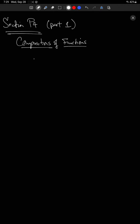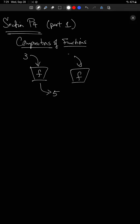We've talked in the past about a function being kind of this black box that you put something in and you get something out. Maybe, for example, this function — you put three in, you get five out. And in general, you might say you put x in and you get f of x out.